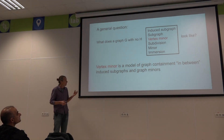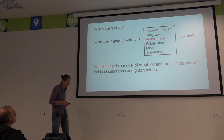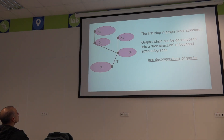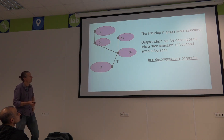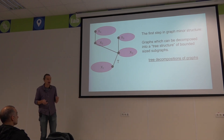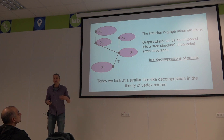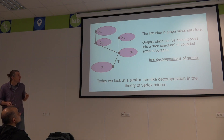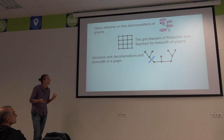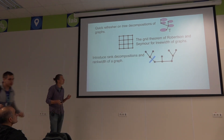In a way, vertex minors are a model of graph containment that's sort of in between traditional graph minors and induced subgraphs — it has properties of both. Towards the Robertson-Seymour theorem, the very first step when you want to prove the structure of graphs excluding a fixed minor is they start with graphs which can be decomposed into a tree structure, into bounded sized subgraphs, yielding tree decompositions. Today we want to look at a similar tree-like decomposition within this theory of excluded vertex minors.